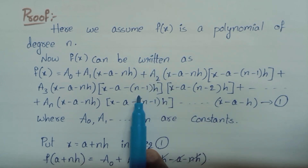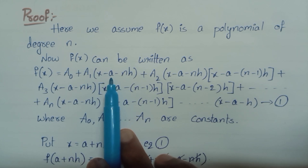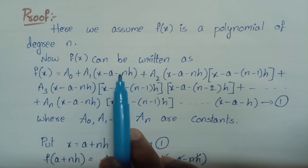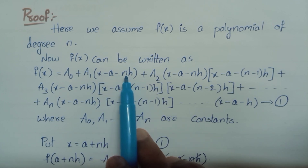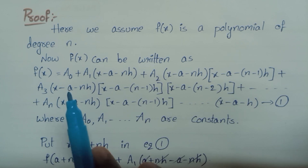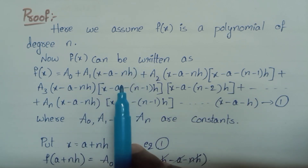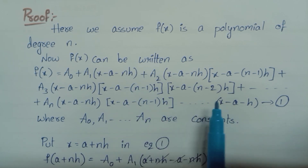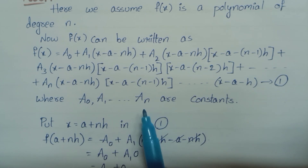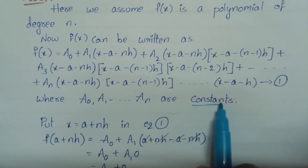In forward difference we use (x − a), but here in backward we use (x − a − nh). Observe the difference: there, (x − a) alone; here, (x − a − nh). This is equation 1, where a0, a1, a2, and so on are constants.